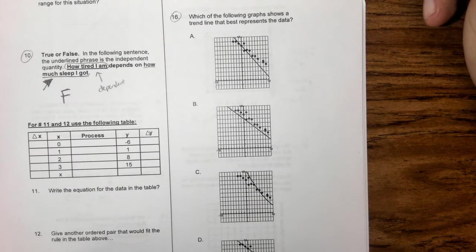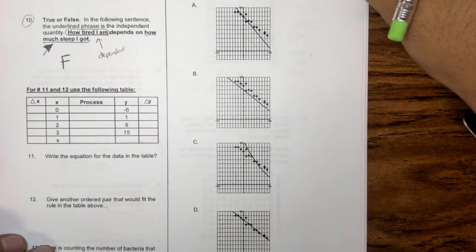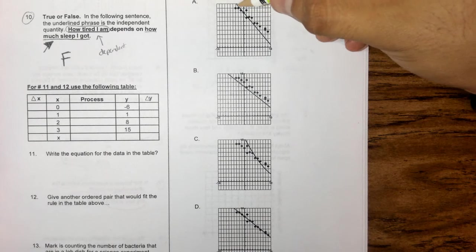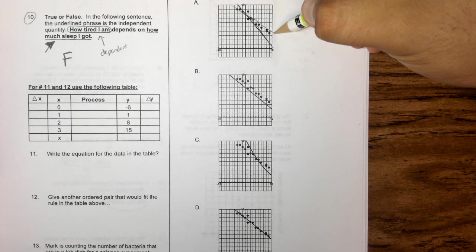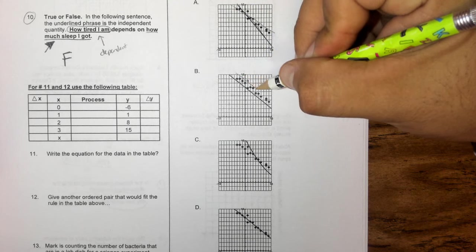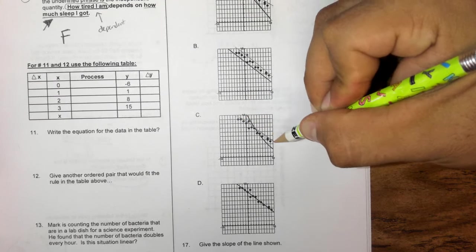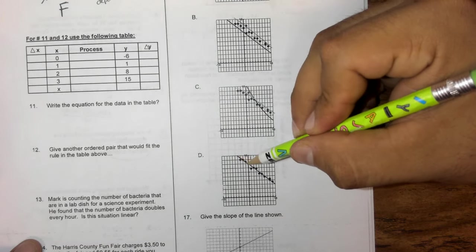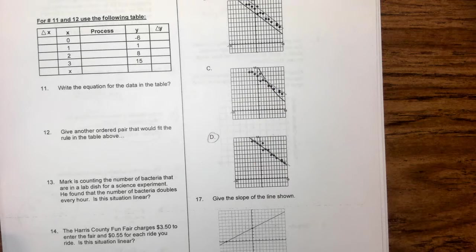Alright, 16. Which of the following graphs shows a trend line that is the best, that best represents the data? So basically, which of these lines, which of these data points, has a line that best fits the data. So you see how this line is just slightly off, like it really should be there, that would be a lot better of a line. Same thing, this one's just slightly off, it should be just a little bit higher. This one, same thing, it should, and it kind of curves, I don't really think that curve is really necessary. And then d, d is going to be the only one that fits the graph pretty well. So my answer here is going to be d.